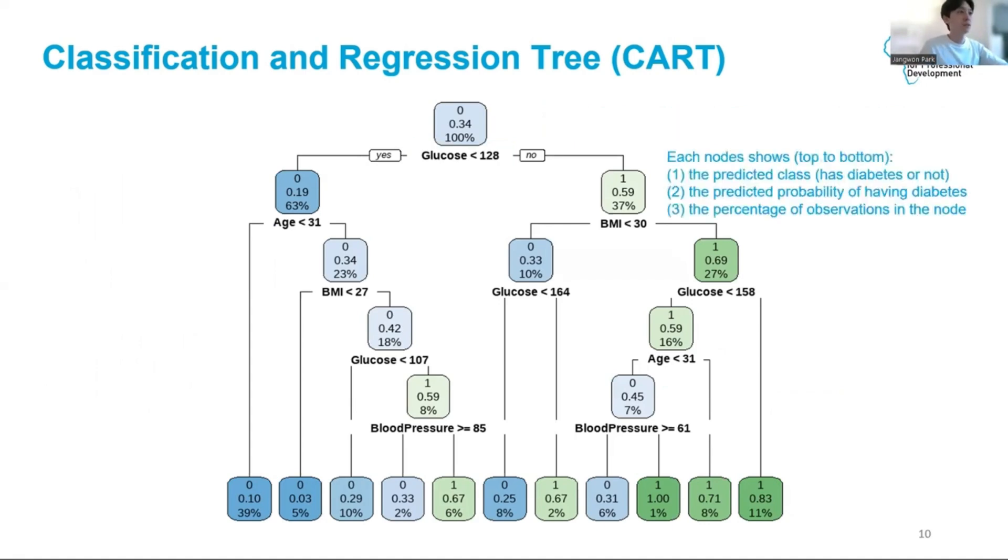You will notice that each node has three numbers from the top to the bottom. The first number is the predicted class within that node. For example, based only on glucose being 128 or higher, our model prediction would be one, meaning diabetic. The second number in the node is the predicted probability of having diabetes. Since the probability is only 0.59 in this node, we can tell that our model is not very strong at this point yet. Finally, the third number is the percentage of the data points at this node.